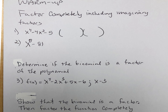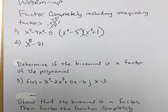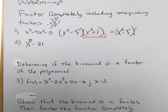What two numbers multiply to negative five and add to negative four? Negative five and positive one. So we get (x squared minus five)(x squared plus one). That would be the correct answer, but for extra credit you have to factor the sum of the squares. So x squared plus one becomes (x plus i)(x minus i). Putting i and negative i is okay too.